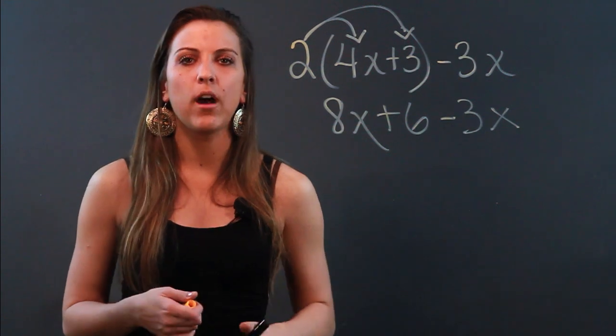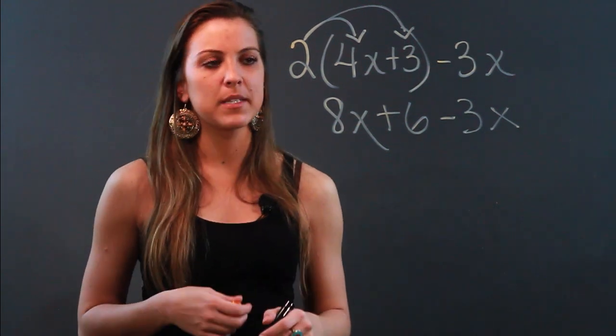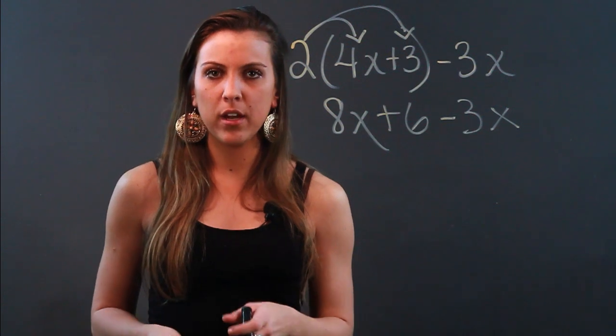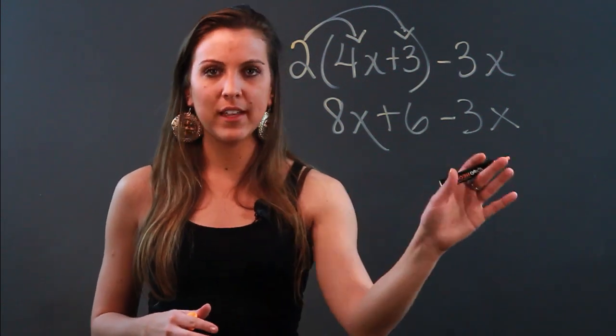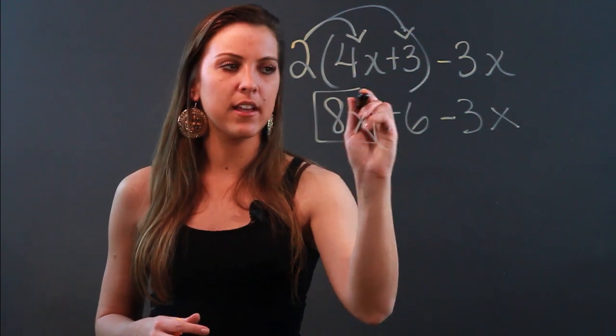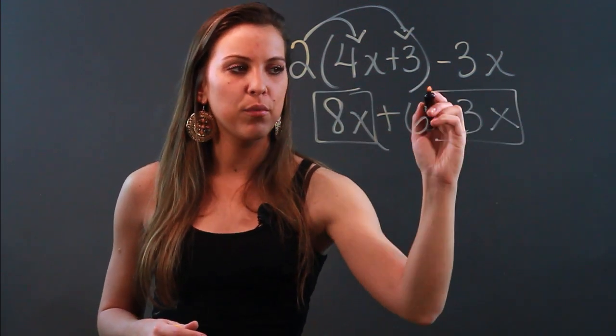So I've distributed and now I'm looking to combine like terms. Like terms have the same variable, same exponent. So the only like terms I see here are 8x and negative 3x.